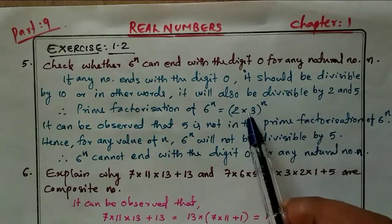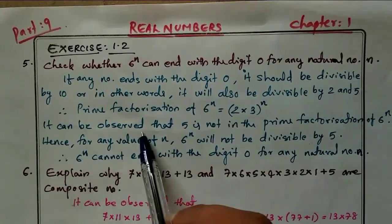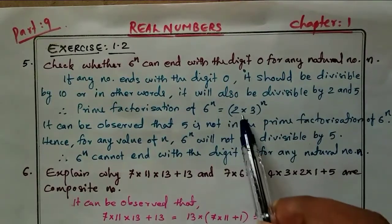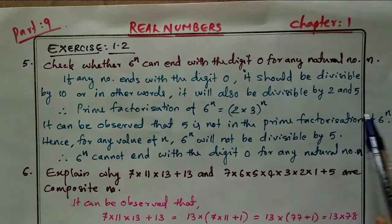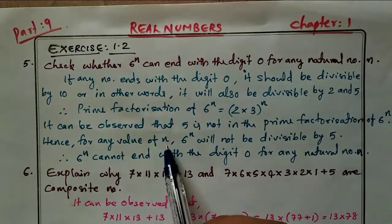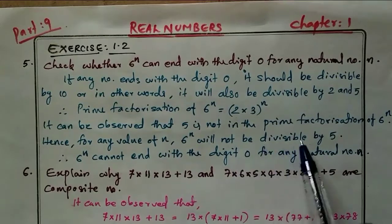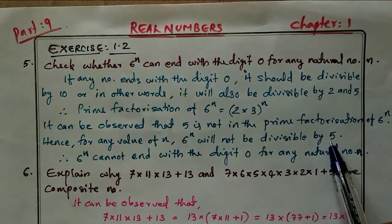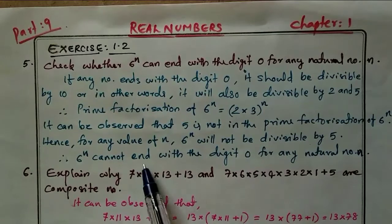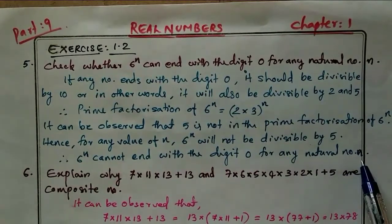It can be observed that 5 is not in the prime factorization of 6^n. Hence, for any value of n, 6^n will not be divisible by 5. Therefore, 6^n cannot end with the digit 0 for any natural number n.